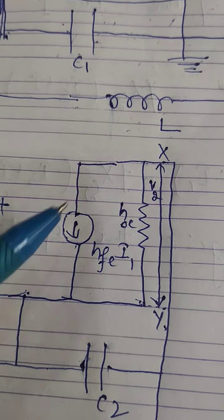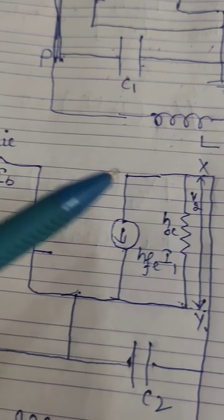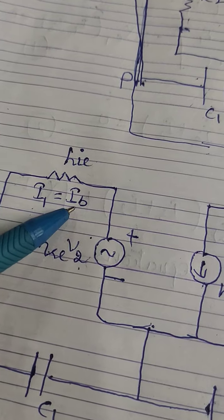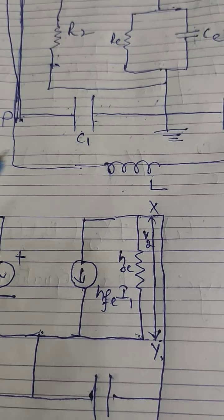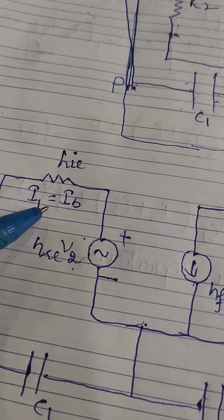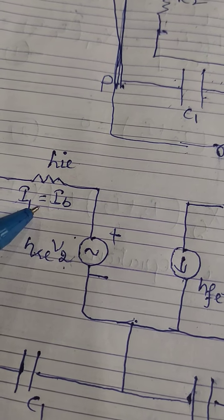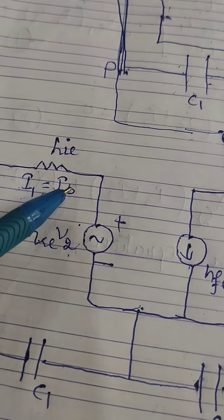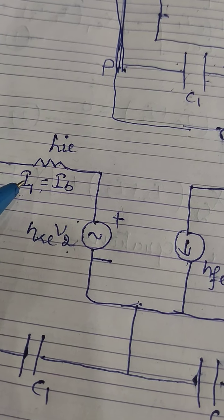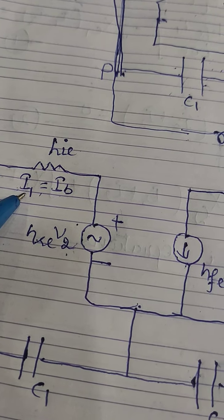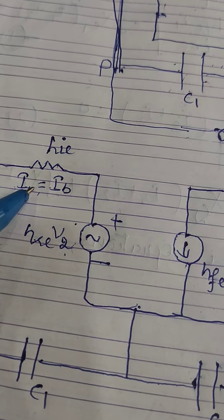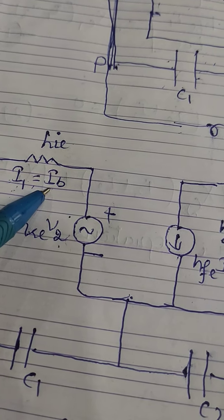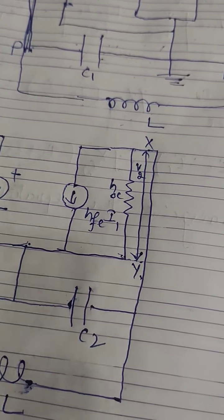In the hybrid model: hre·v2 is the voltage source, hfe·i1 is the current source, hoe is the conductance, hie is the input resistance, ib is the input current, and i1 is the feedback current. For the critical condition, we consider i1 equal to ib — that means the feedback current equals the input current. The feedback current should be equal to or greater than ib, but for the critical condition we take i1 = ib.